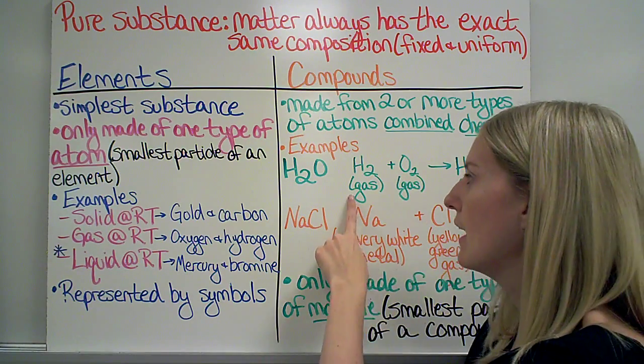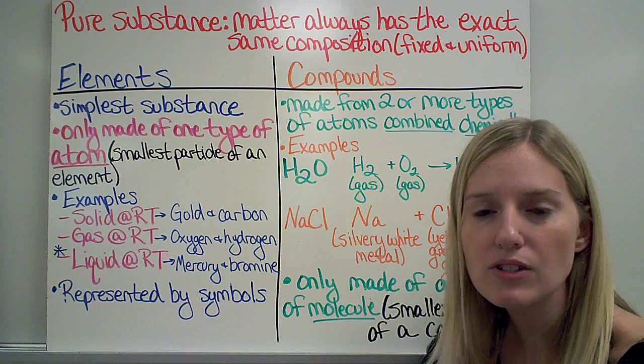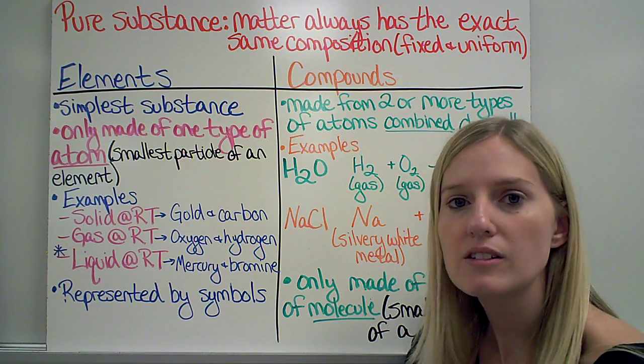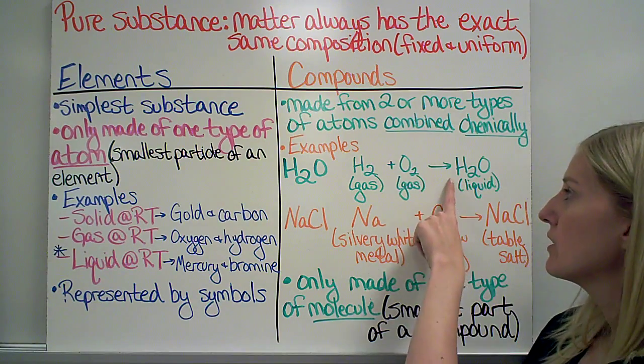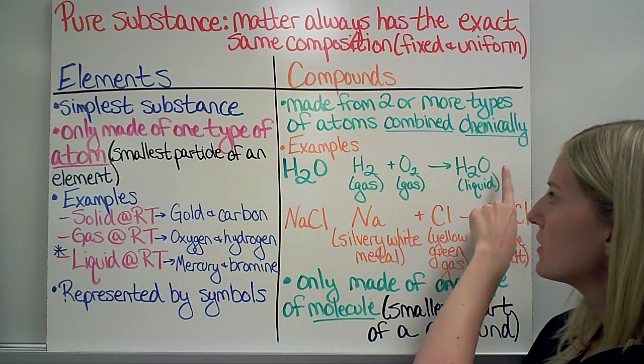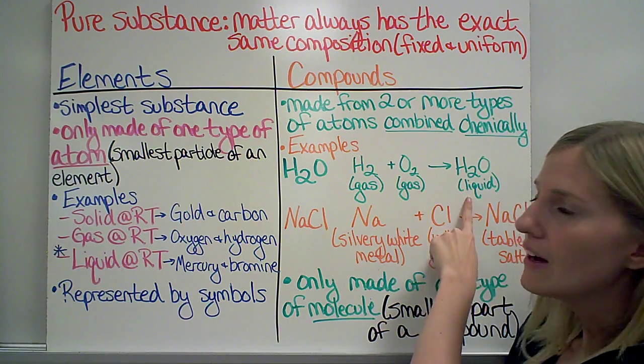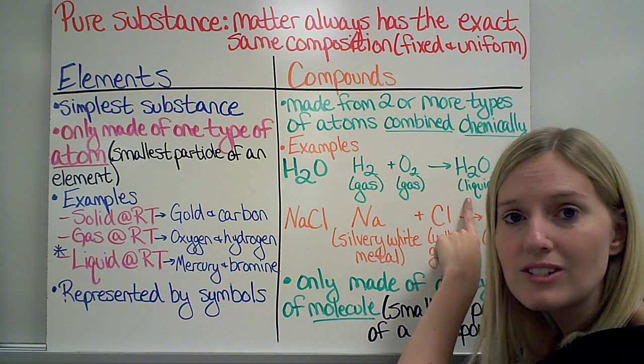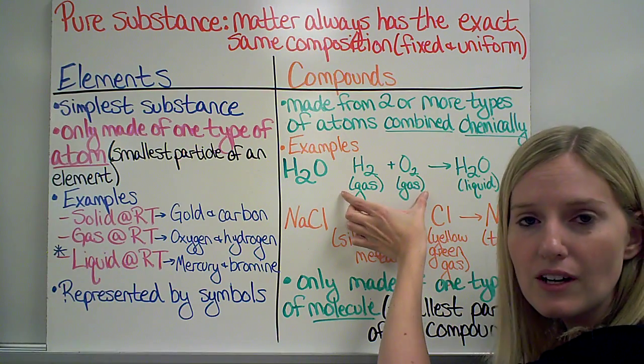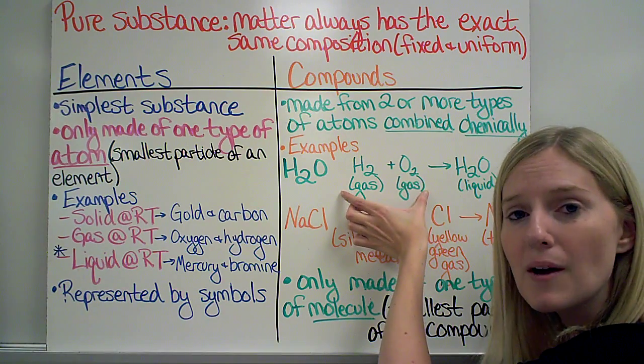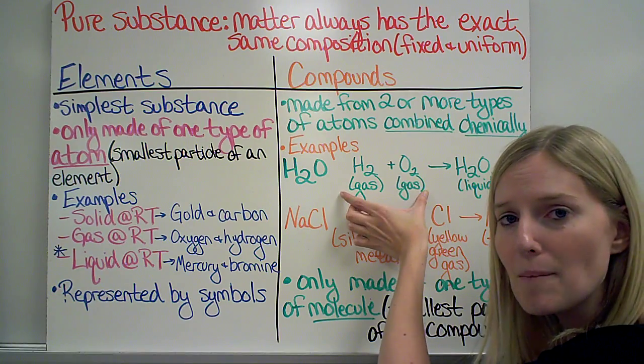Well, when hydrogen and oxygen are by themselves, we know that they are colorless, odorless gases. But when I put them together with two hydrogen atoms and one oxygen atom, I make water, which is a liquid. So these parts have specific characteristics, but when I combine them chemically into a compound, that ends up having new characteristics or new properties.